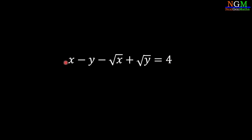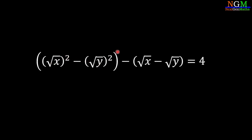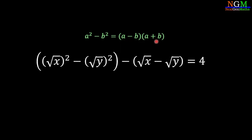x can be written as the square of root x, and y can be written as the square of root y. So we have: square of root x minus square of root y minus root x minus root y equals 4. We now use the algebraic identity a squared minus b squared equals a minus b times a plus b.